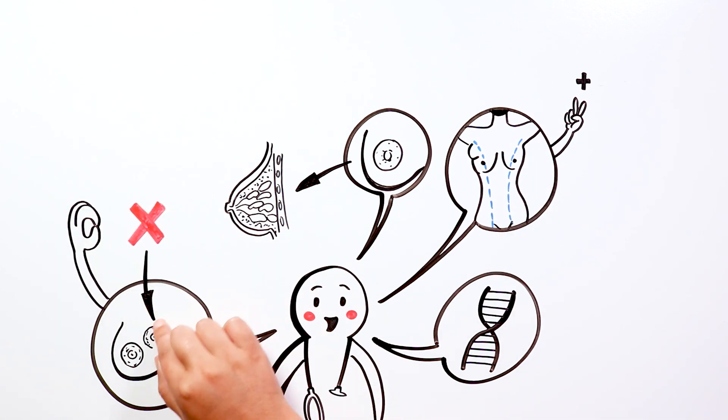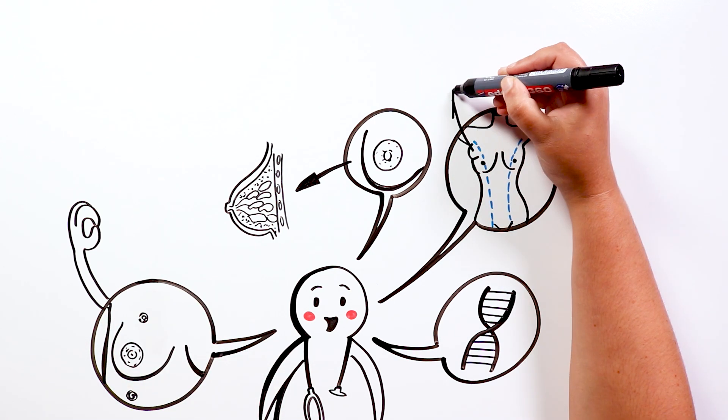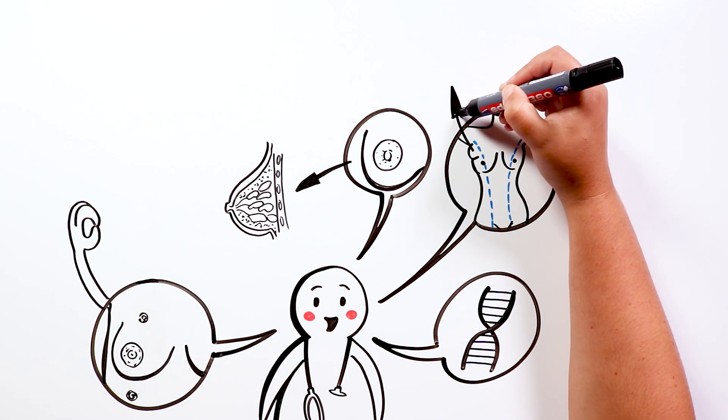In the case of polythelia, they are usually small and can even be confused with warts or moles. However, in polymastia, by having breast tissue, even if they are small, they could suffer the changes that the breast undergoes.